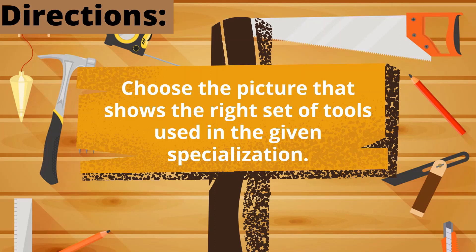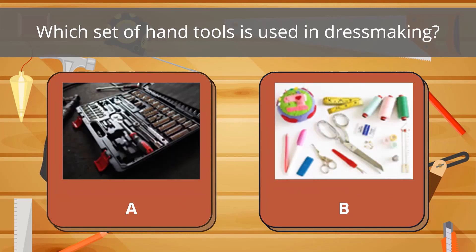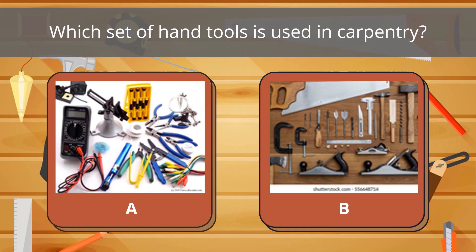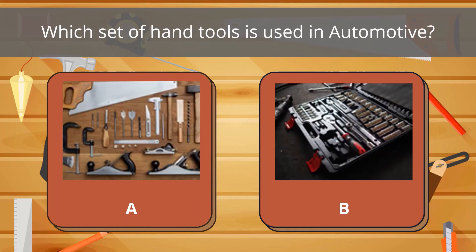Before we start our lesson, let us first play a game. Choose the picture that shows the right set of tools used in the given specialization. Which set of hand tools is used in electronics? It's letter A. Which set of hand tools is used in dressmaking? It's letter B. Which set of hand tools is used in cookery? It's letter A. Which set of hand tools is used in automotive? It's letter B! Great job, students!